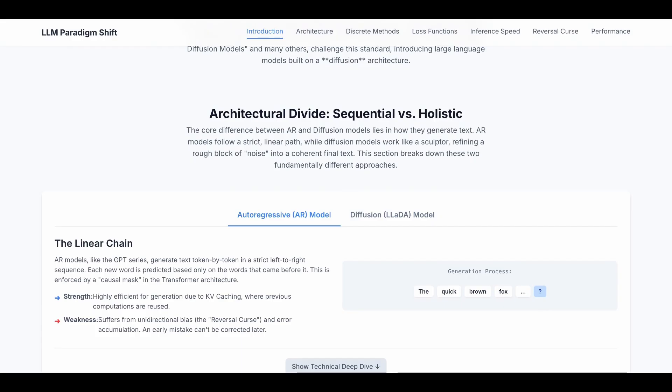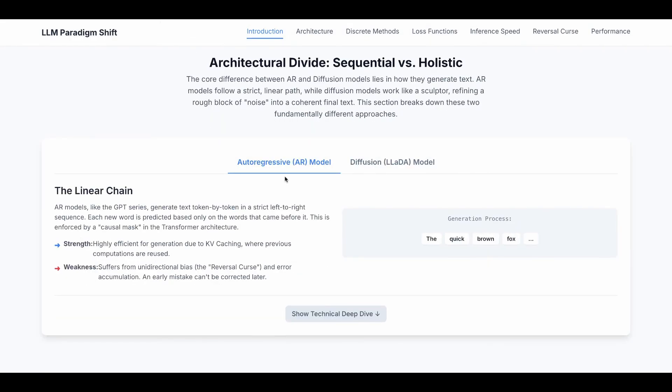While diffusion models work like a sculptor refining a rough block of noise into coherent final text. For autoregressive models, this is a visual explanation of how it works. It predicts the next word given past context, one word at a time. Autoregressive models like the GPT series generate text token by token in a strict left to right sequence.